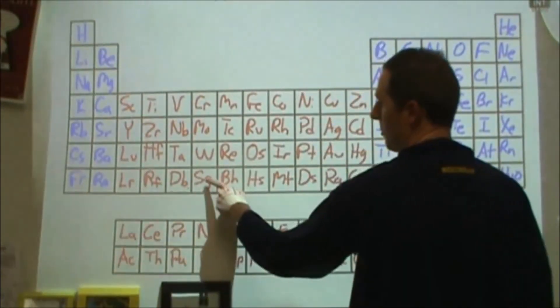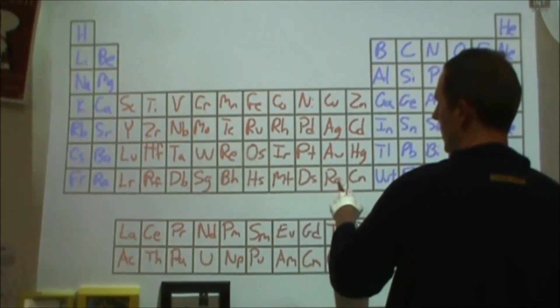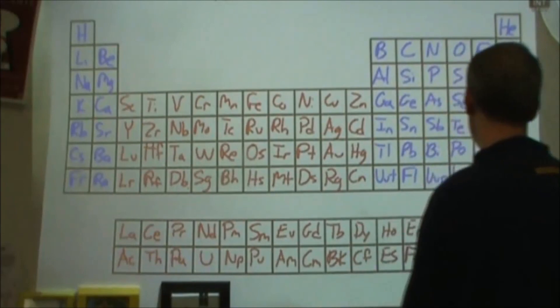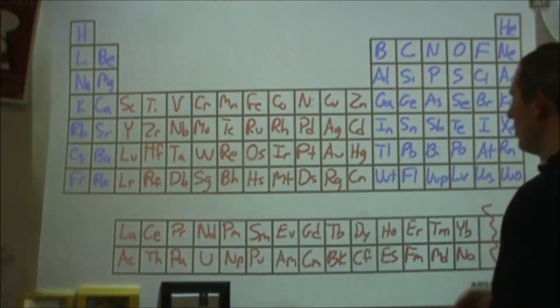Lawrencium, rutherfordium, dubnium, seaborgium, bohrium, hassium, meitnerium, darmstadium, roentgenium, copernicium, ununtrium, flerovium, ununpentium, livermorium, ununseptium, and ununoctium.